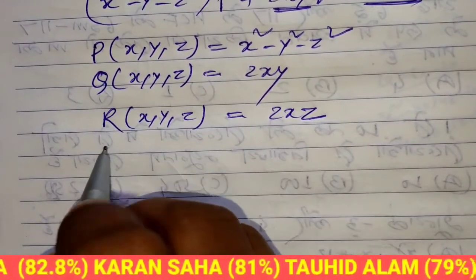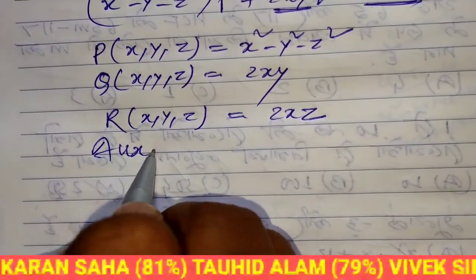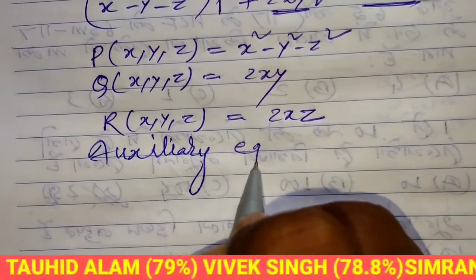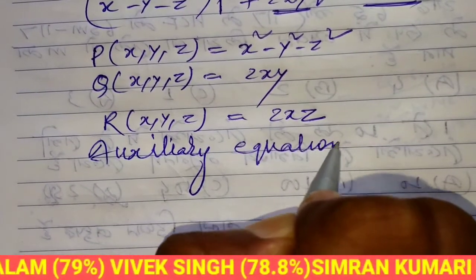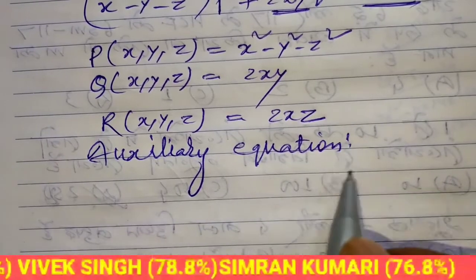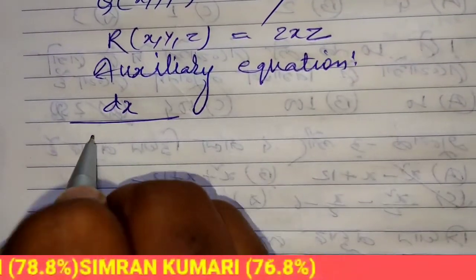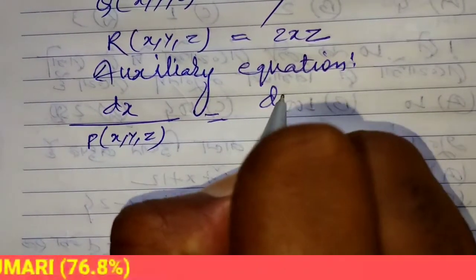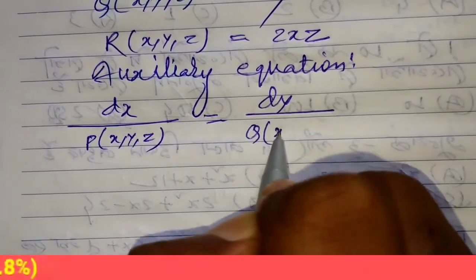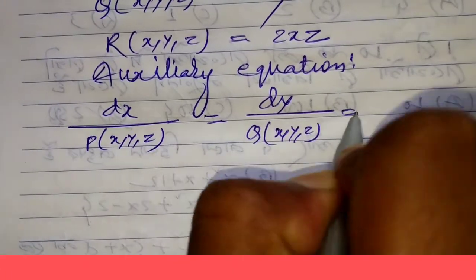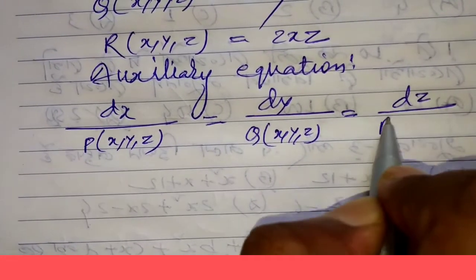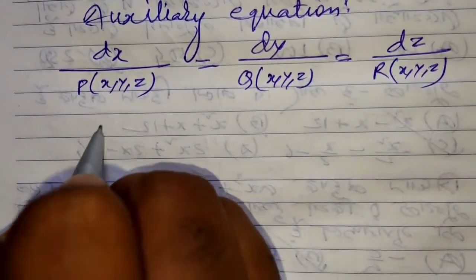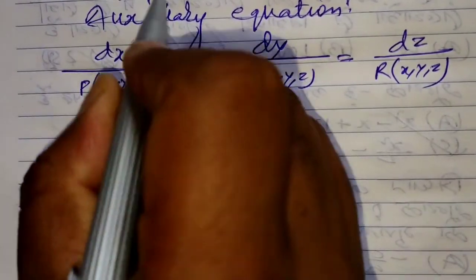In this case, the auxiliary equation of this differential equation is dx/P = dy/Q = dz/R, where dx/(x² - y² - z²) = dy/Q = dz/R.